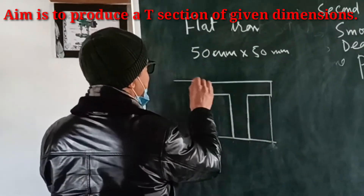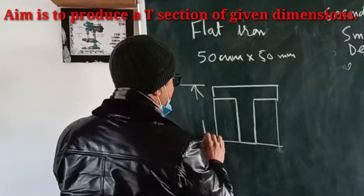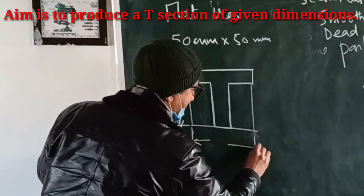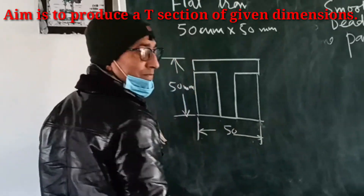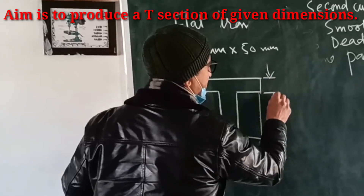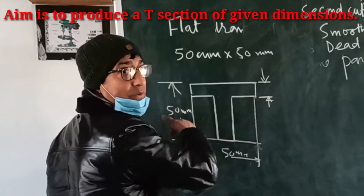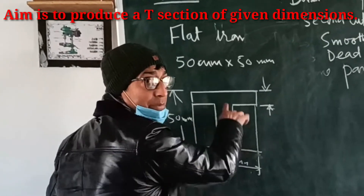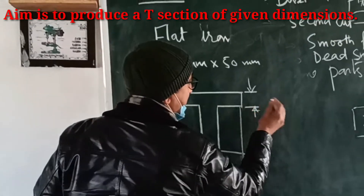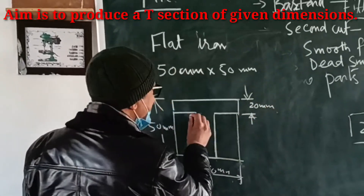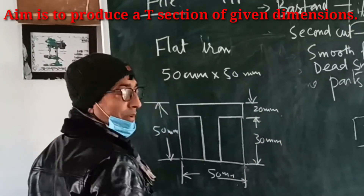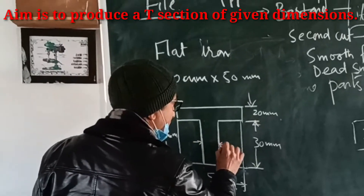The dimension on this end is 50 mm and the dimension on this end is 50 mm. The vertical part is called the web, and the horizontal part is called the flange. This flange is 20 mm, meaning the length from this point to this point is 30 mm. And the other side should also be 20 mm.